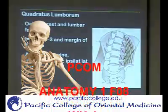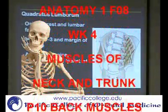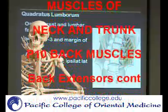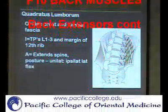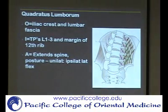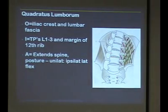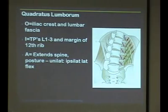The quadratus lumborum originates from the iliac crest and the thoracolumbar fascia. The basic information you need to know is that it comes off the iliac crest and thoracolumbar fascia down here, and then it goes to the transverse processes of L1, L2, L3, and then the 12th rib up here.